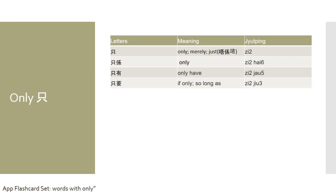The second Chinese character I want to talk about means only. In Cantonese, it is pronounced 只 (ji). To say only in Cantonese, it would be 只係 (ji hai). For example, if I say only ten dollars, I would say 只係十元 (ji hai sap yuen).